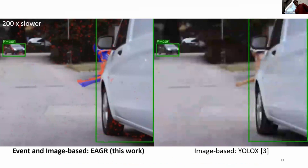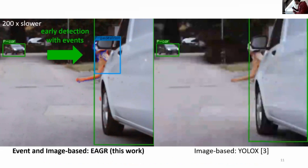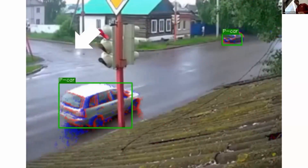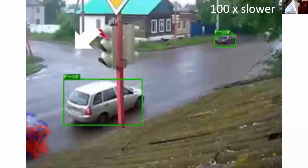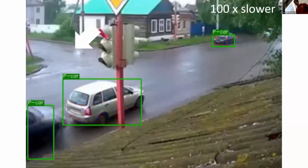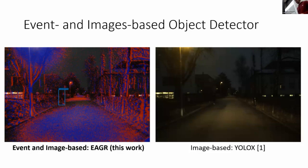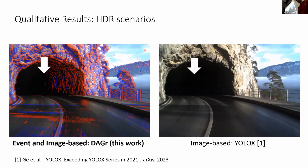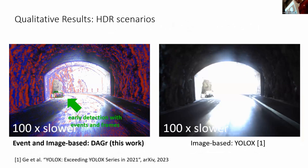One key advantage of this approach: by adding events, we can essentially see into the future by at least one frame and detect traffic participants entering the street earlier than with an image-based method. This is apparent in this dash cam video, where you don't see the car yet in the image, but you can see the events of the car — letting us detect the crash much earlier. There's also a low-light use case, where we can detect a pedestrian using the event camera's advantages. And in a tunnel-exit scenario where auto-exposure causes issues in the RGB image, we can detect the car more easily with events.